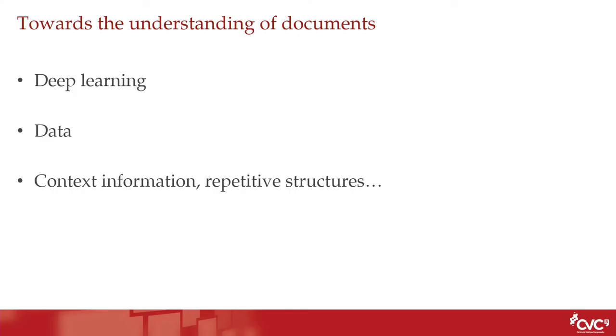To summarize, if we want to go towards understanding documents, there are three key ingredients: first, deep learning and its power when we can train the system; second, data — what kind of data we have and whether it's labeled; and third, can we benefit as much as possible from context information and repetitive structures? And the next step: can we incorporate knowledge? That's it. Thank you very much.